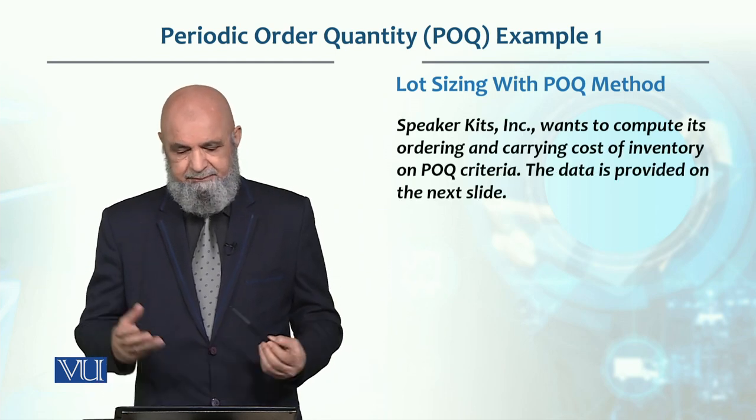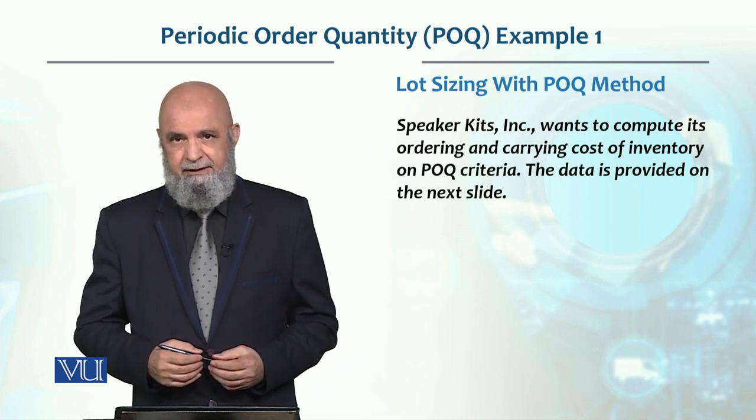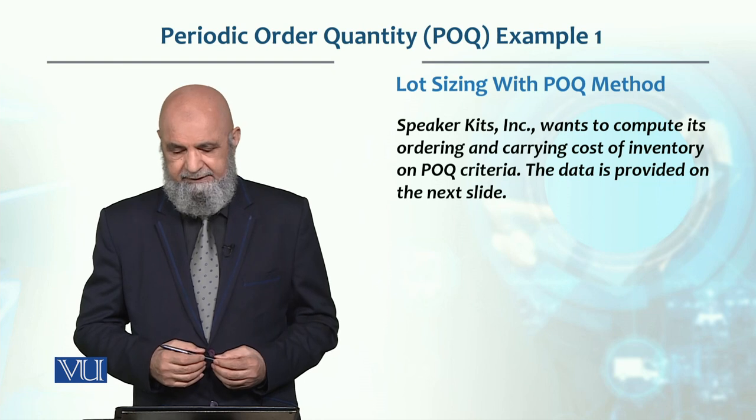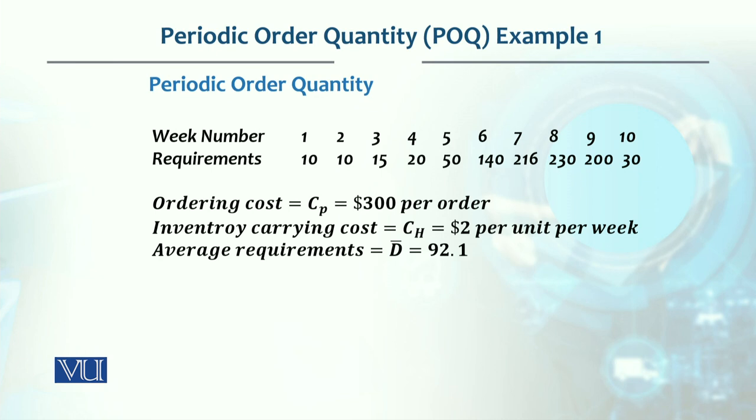This is the data we have used in previous rules. There are 10 weeks of different requirements. The ordering cost is $300 per order, inventory carrying cost is $2 per unit per week, and the average requirement is 92.1.